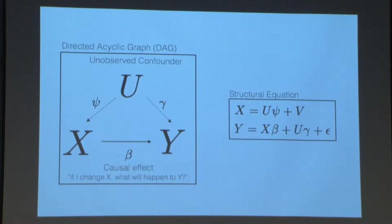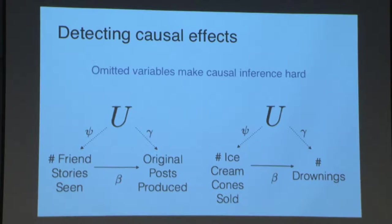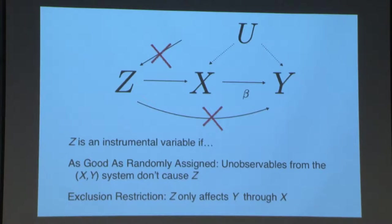The framework has causal variables that are potentially endogenous — the x's affecting y's — and we're interested in the causal effect beta, which is potentially confounded by unobserved values u. That's why we run experiments in the first place: omitted variable bias makes causal inference difficult. A concrete example: how does the number of stories someone sees in newsfeed from friends affect how many original posts they produce?